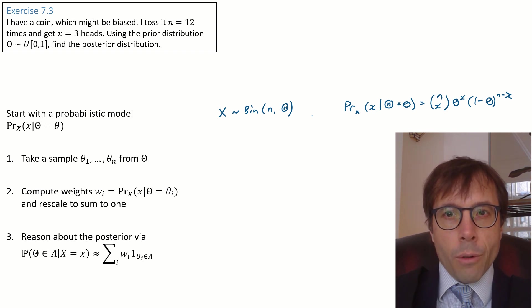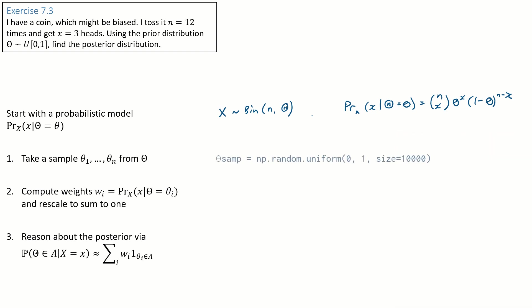Let's say random variable big X is binomial with parameters n and theta. We know n is 12 and we don't know theta. Next step, take a sample of theta values from the prior. The question tells us to use a uniform prior, so that's what we're sampling from.